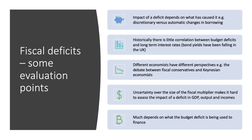Some key evaluation points to finish with: the impact of an increased budget deficit depends on what's caused it — is it automatic because the economy has gone into recession (an automatic change in borrowing), or has the government deliberately chosen to borrow more money for a specific reason?